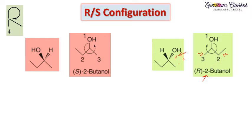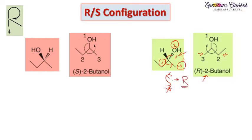Method 2: if you don't want to do that exercise, simply rotate groups 1, 2, 3 as drawn — this gives anticlockwise, which would suggest S. But your fourth priority group is on the solid wedge, not on the vertical line, so you make one interchange and convert S to R. In either method you arrive at R for this molecule.